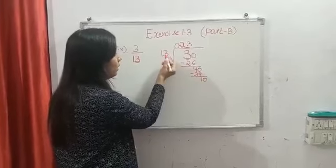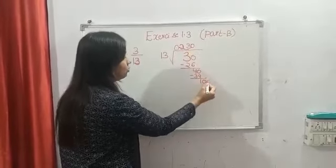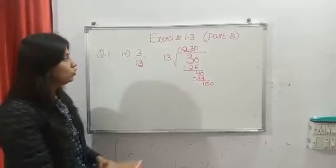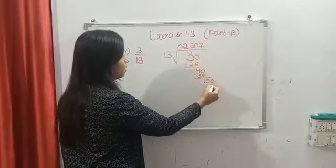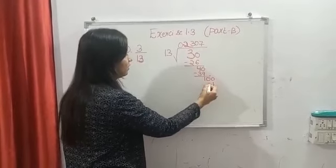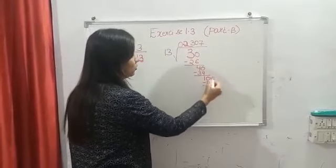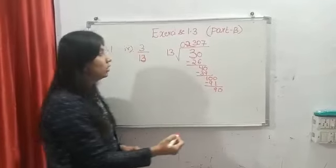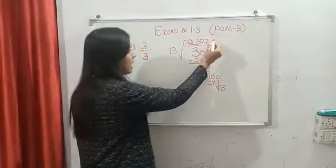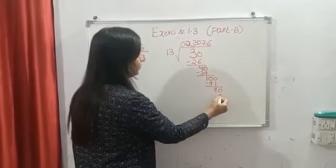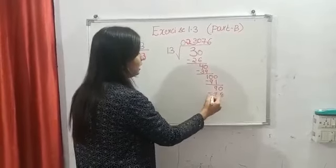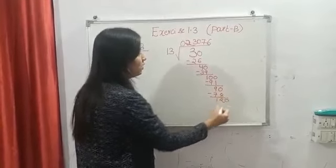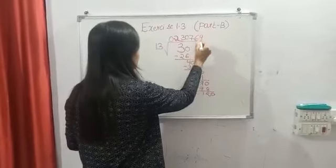You will put one zero here. 10 will not go in the table of 13, so you will add zero here also. Now we are having 100. 13 times 7 is 91. Again you will put one zero. 13 times 6 is 78, so 90 minus 78 will be 12. Again you will put one zero. 13 times 9...